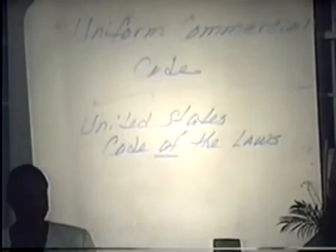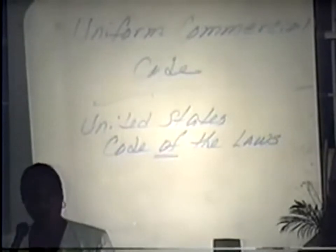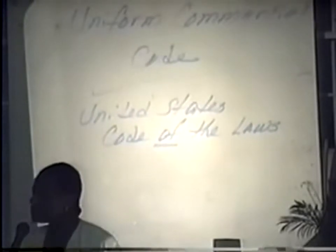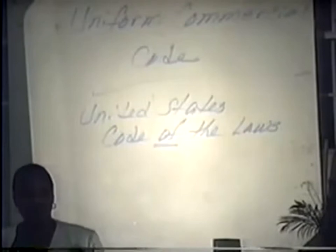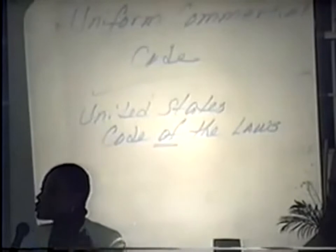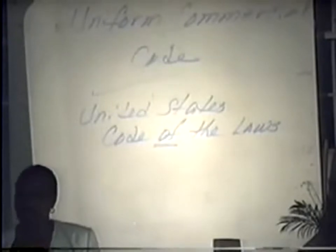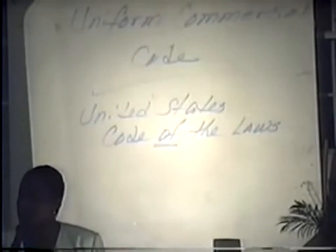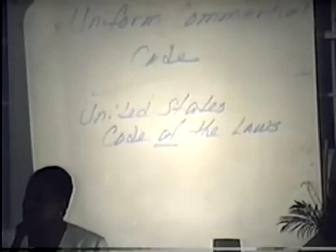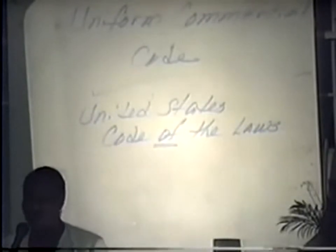They come up with all these different little reasons to get me out of there because they don't want me in there — because I know too much, and I will speak. The United States Code of the Laws also contains the different codes and procedures, the Federal Rules of Civil Procedure, and all of the criminal code. Understand: if there's a parking ticket, they're saying they're suing you for a criminal offense. If there's a speeding ticket, that's a criminal offense — they're suing you in a criminal court.